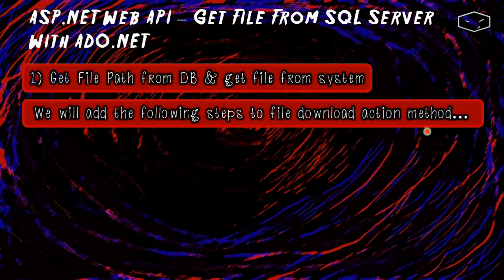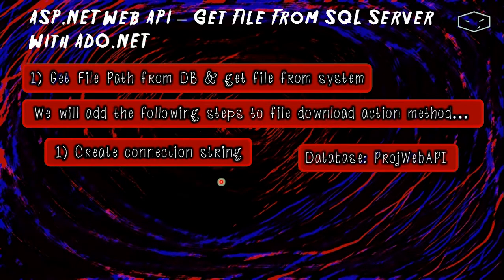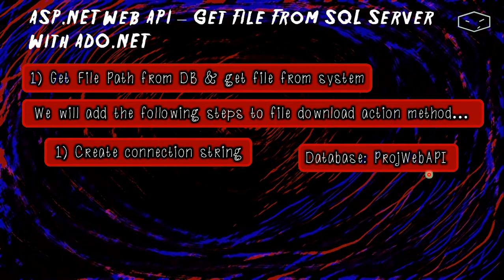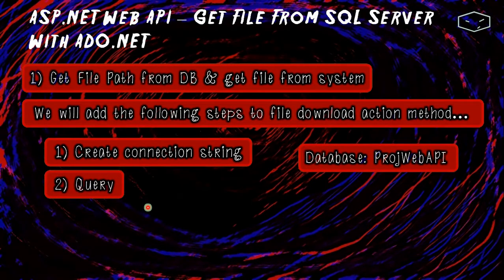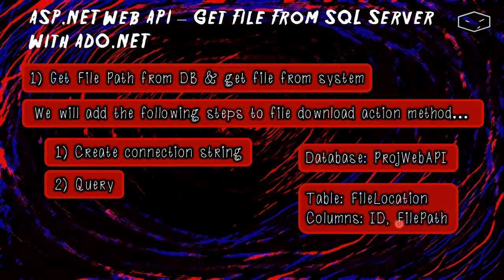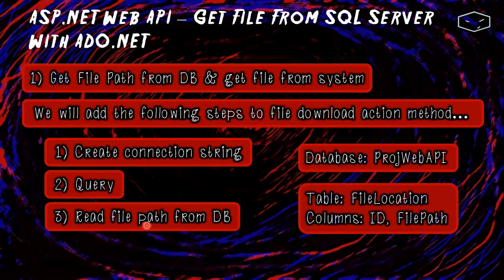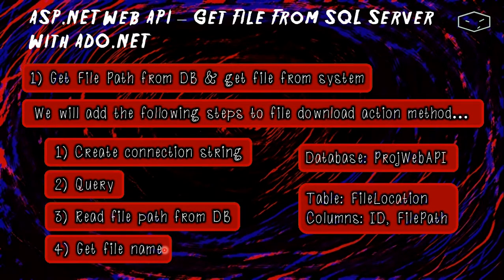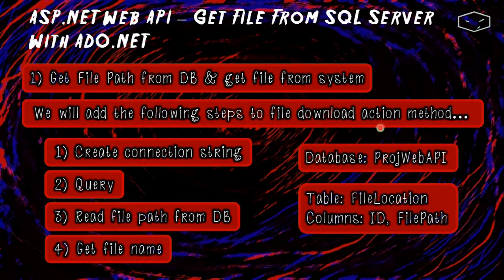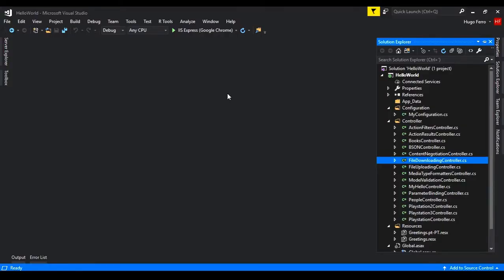We will add the following steps to the file download action method. First, create the connection string — we have the database from the file-saving video. Then we create a query using the file_location table with columns id and file_path. Then we execute the query and get the file path from the database. Finally, we get the file name because we need it to add to the headers of the download action method response.